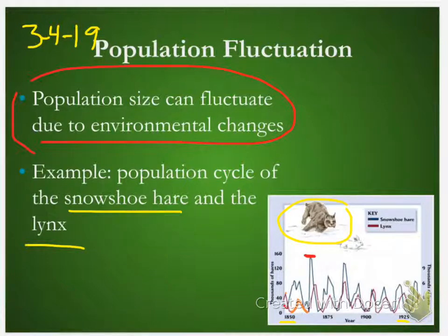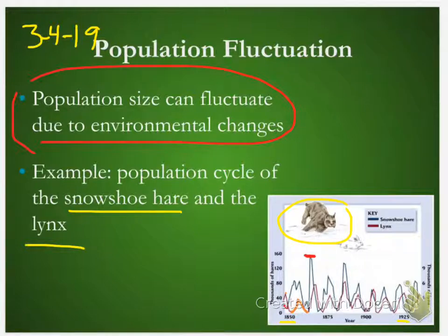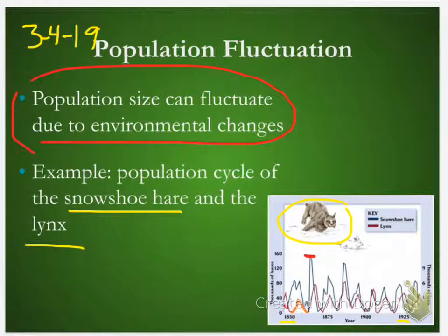We've talked about things like bumper years of acorns — what does that mean for Lyme disease cases? Higher. Because a bumper crop of acorns means a bumper crop of mice, and a bumper crop of mice means more ticks get infected. And then we translate that a couple years down the road to higher Lyme disease cases. We have these changes in the environment that we can't always completely pin down or track, but they cause changes in population size.